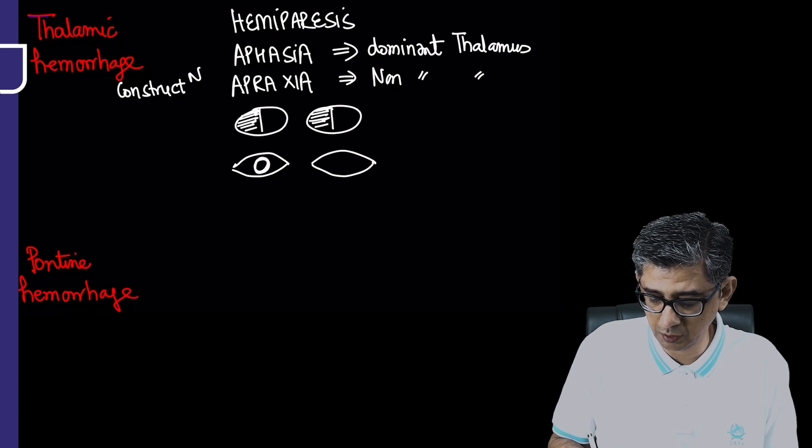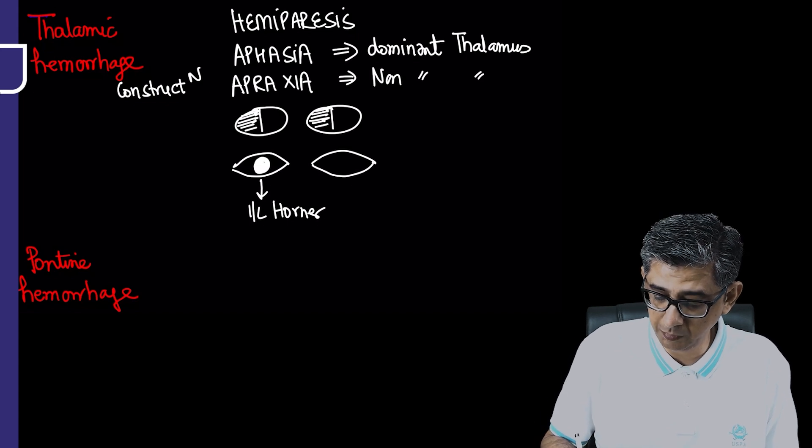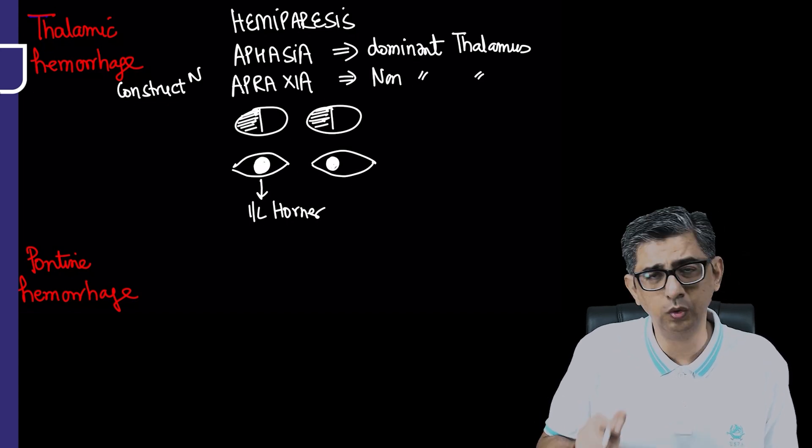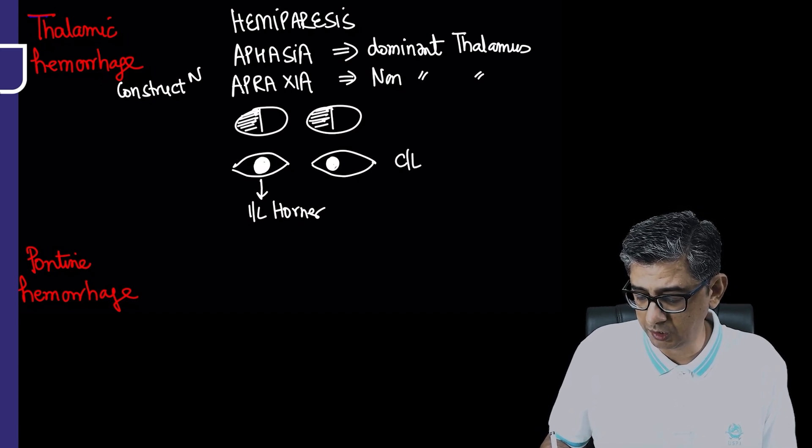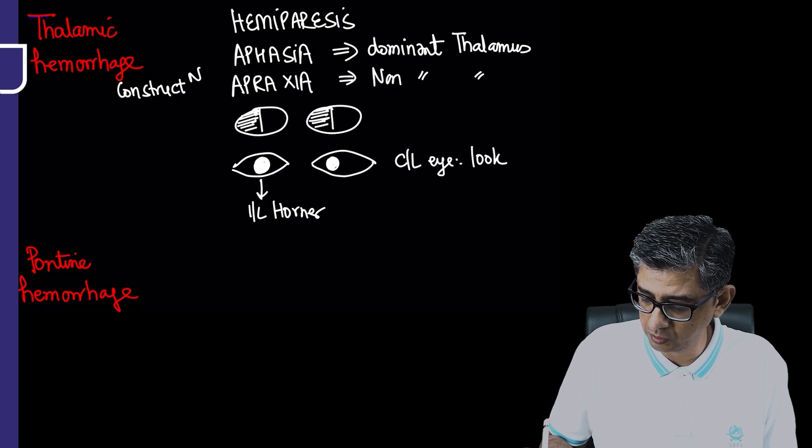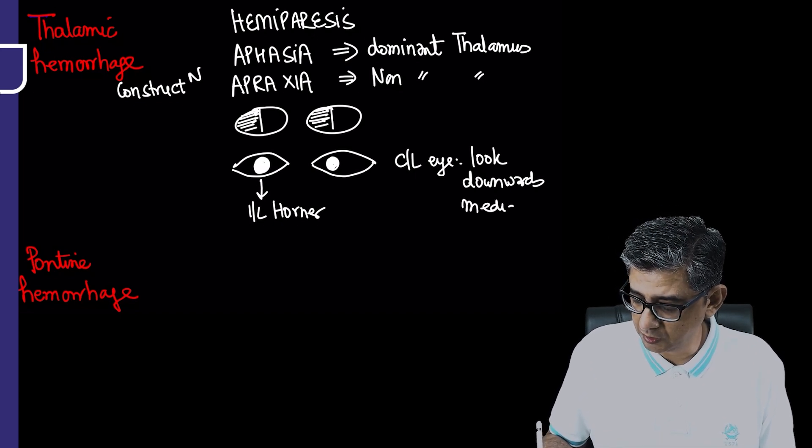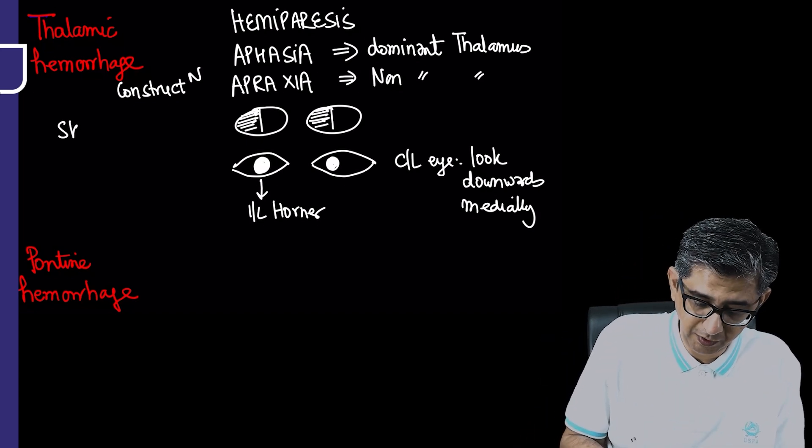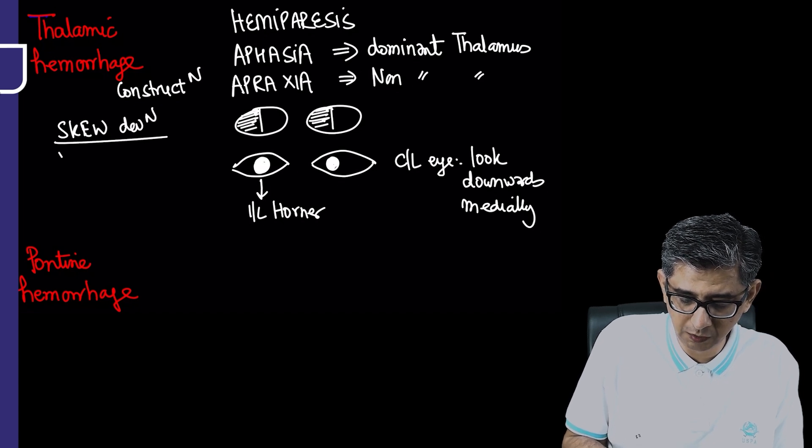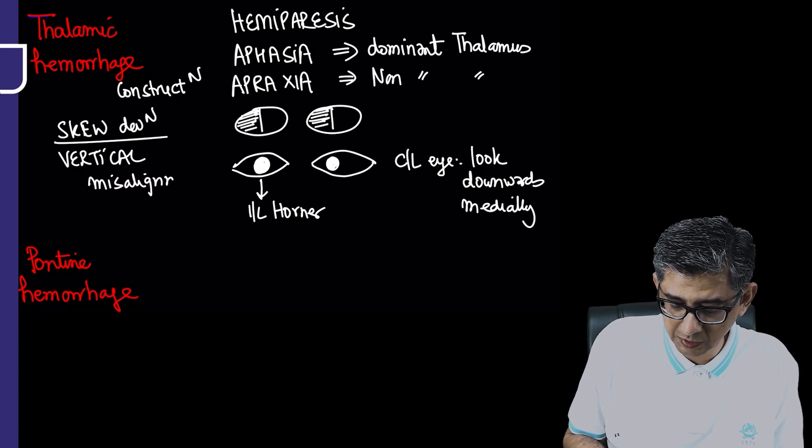Specific eye findings include ipsilateral Horner syndrome—ptosis, miosis with thalamus involvement. Simultaneously there might be eye deviation, like the person trying to look towards the nose. The contralateral eye might look inferiorly and medially, downwards and towards the nose, called skew deviation. Skew deviation means acquired vertical misalignment of the eyes.